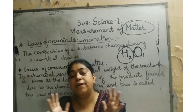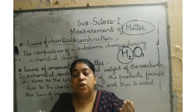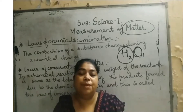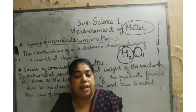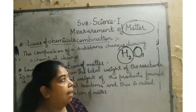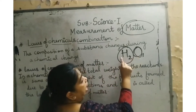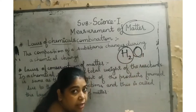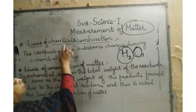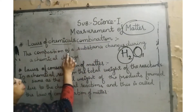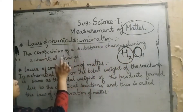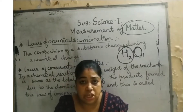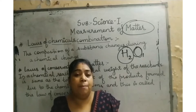Here we are going to concentrate on different types of compounds. Combination means when one element combines with another to form a combination — like hydrogen and oxygen combining together. The law of chemical combination states that the composition of a substance changes during a chemical change.